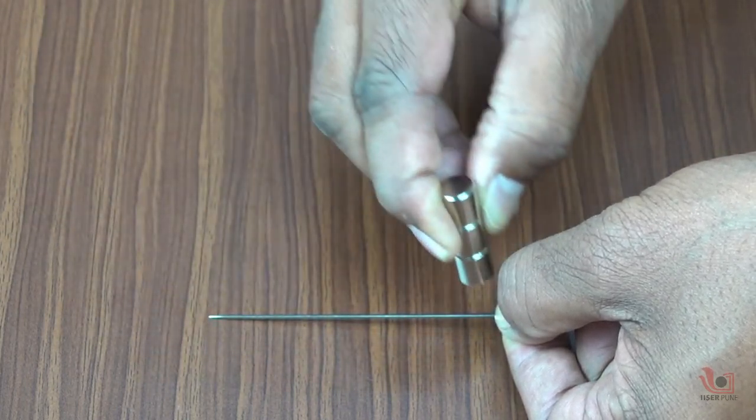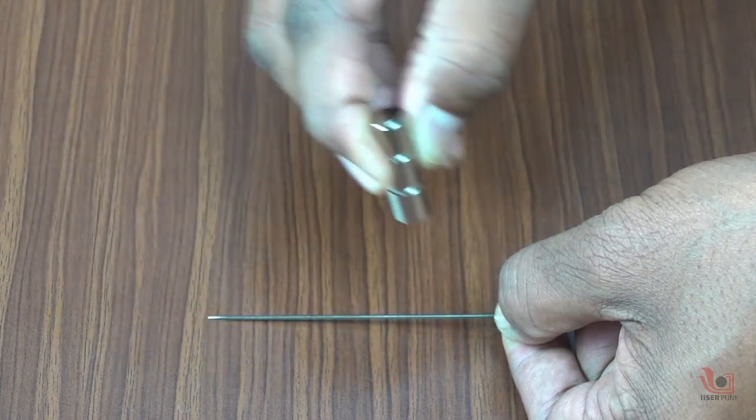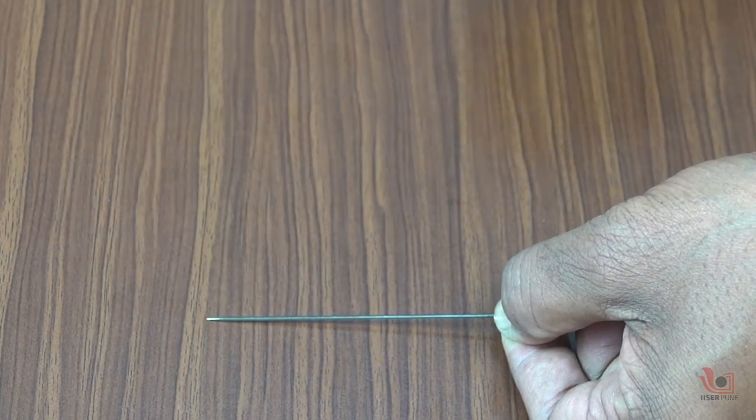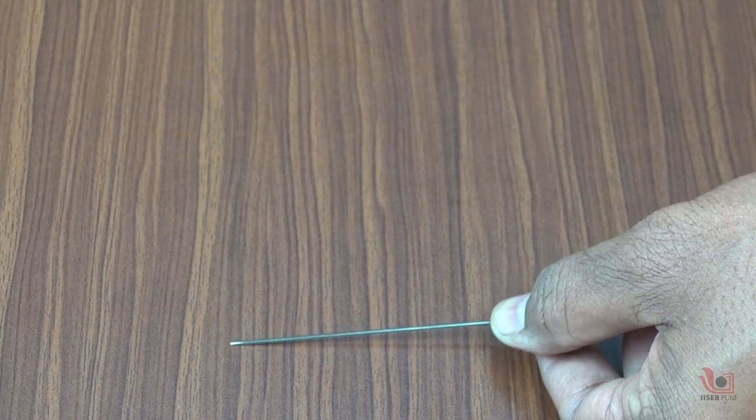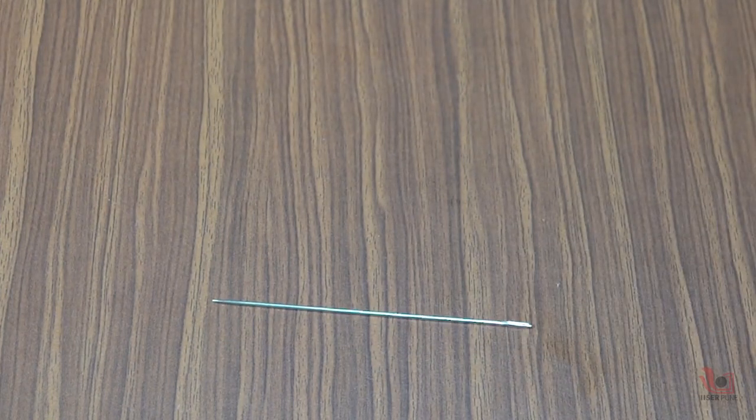After rubbing a strong magnet several times on the needle, it gets magnetized. As you know, the needle is made from iron. Let's understand how an iron needle gets converted into a magnet.